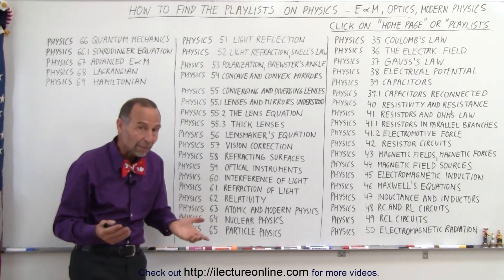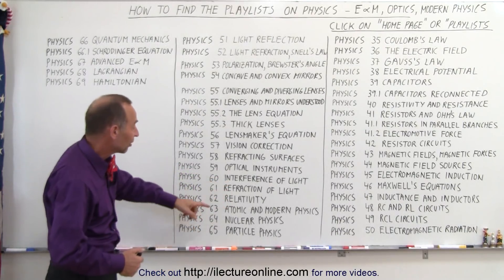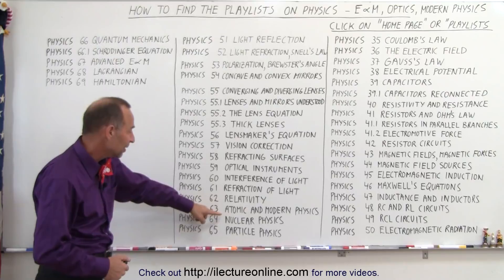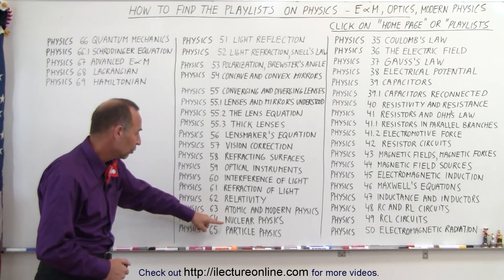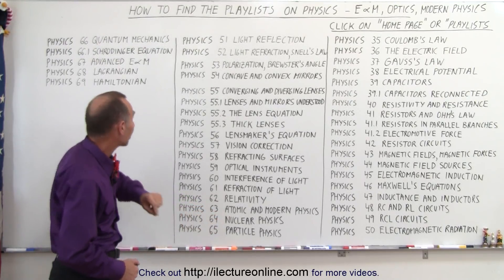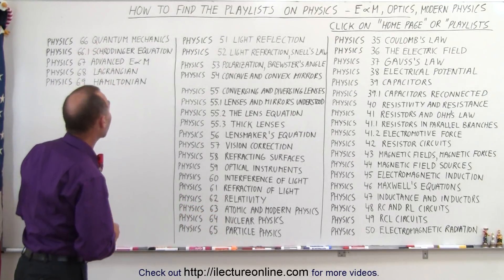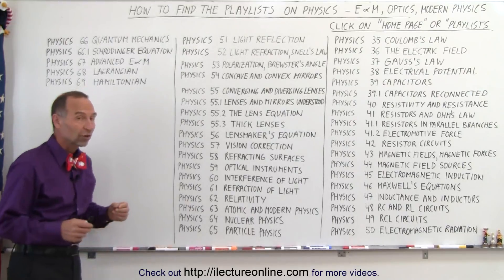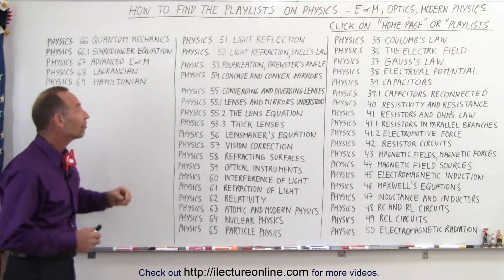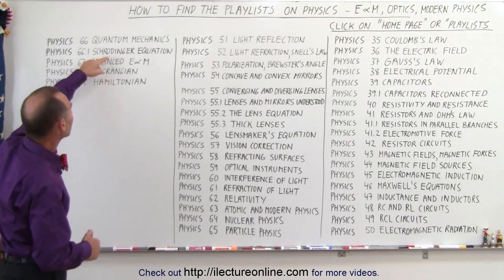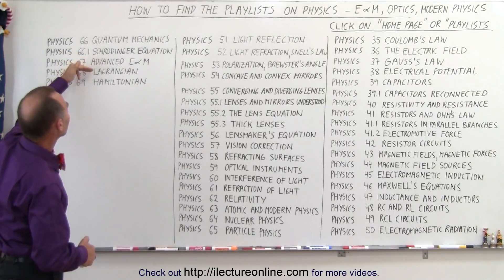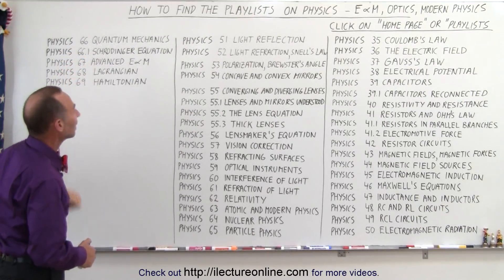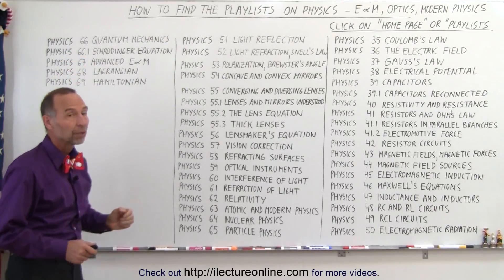Then we get into interference and diffraction of light, and then we start a new topic: modern physics, including relativity, atomic modern physics, nuclear physics, particle physics, and quantum mechanics. We started some detailed information about the Schrödinger equation, and then did a few videos on advanced E&M, the Lagrangian and the Hamiltonian.